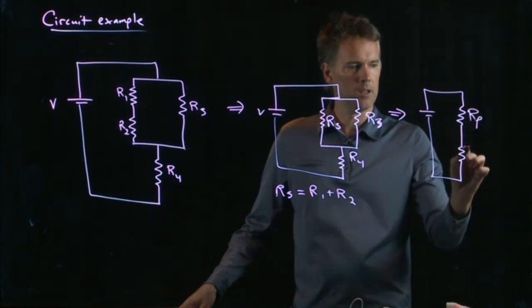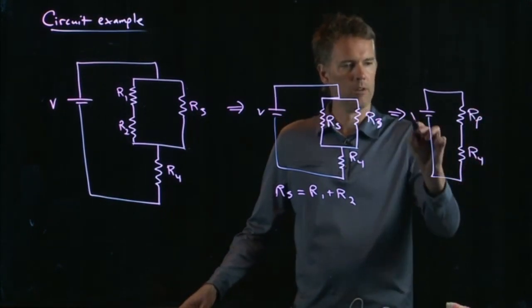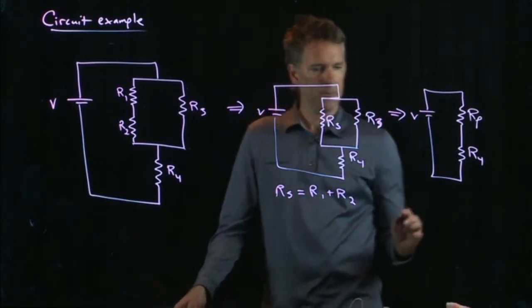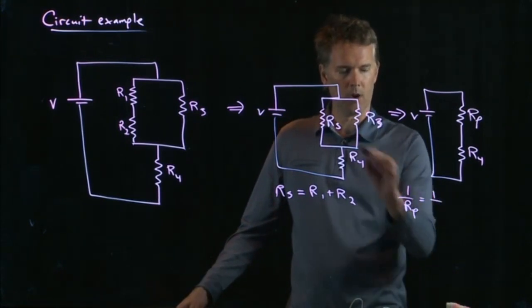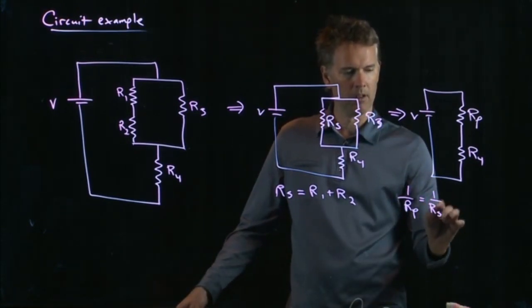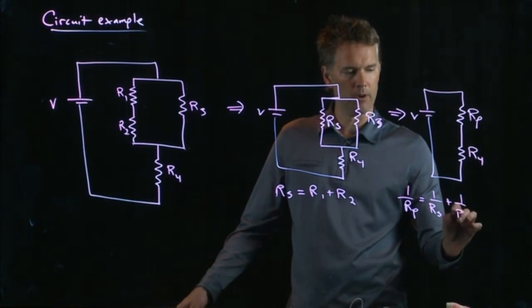This is RP. That is R4. RP is 1 over RP equals 1 over RS plus 1 over R3.